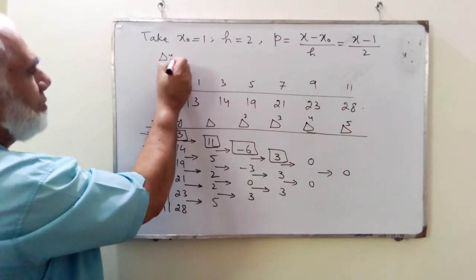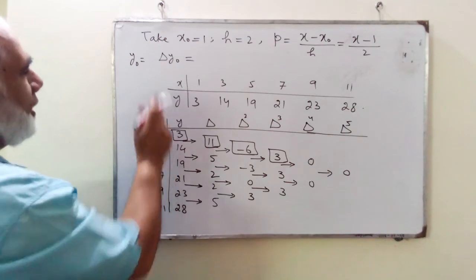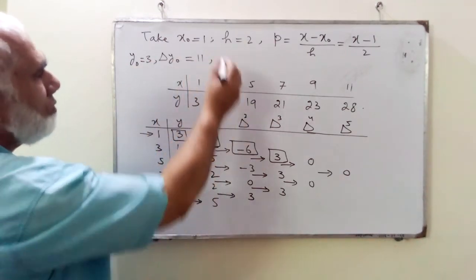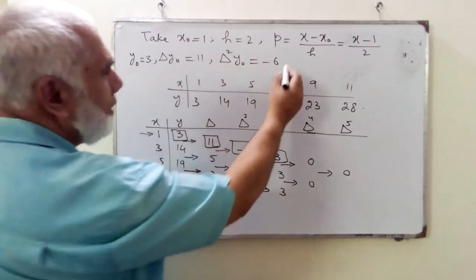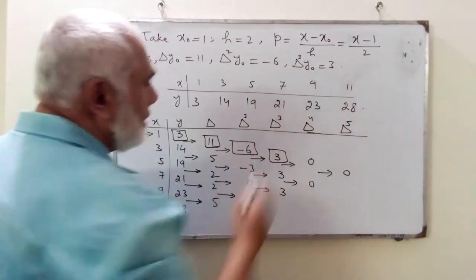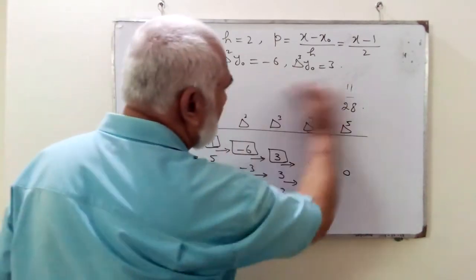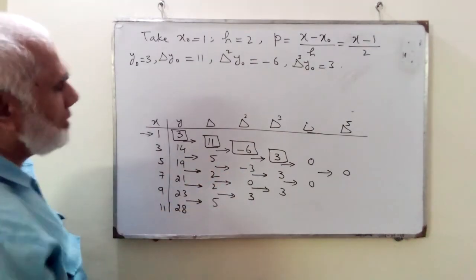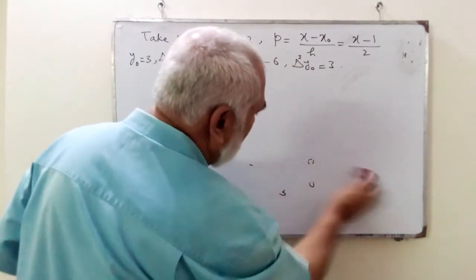From the difference table we identify: y₀ = 3, Δy₀ = 11, Δ²y₀ = −6, and Δ³y₀ = 3. These are the values we have to use in the interpolation formula. The next step is to write down the interpolation formula.